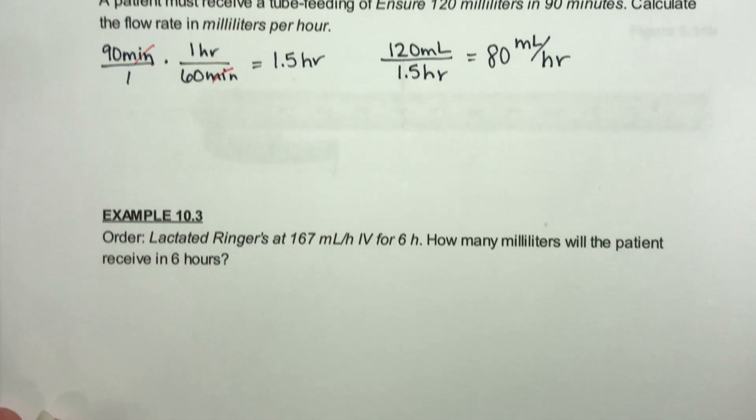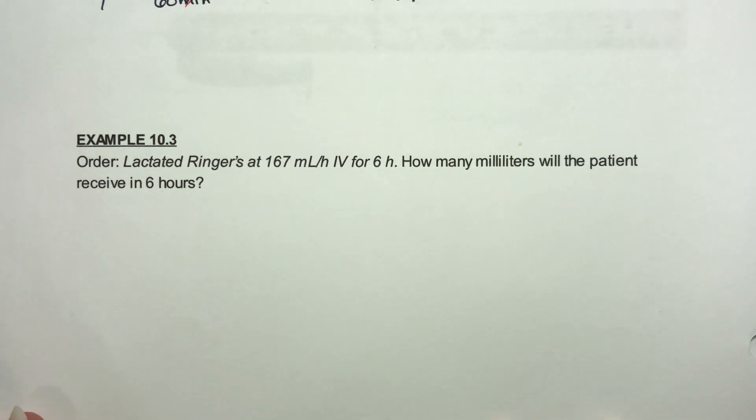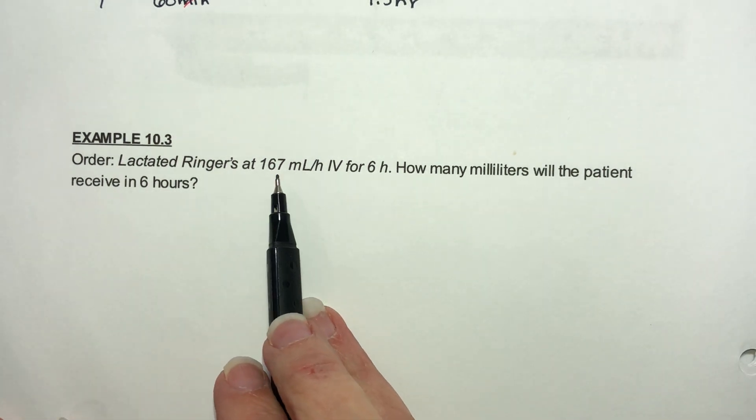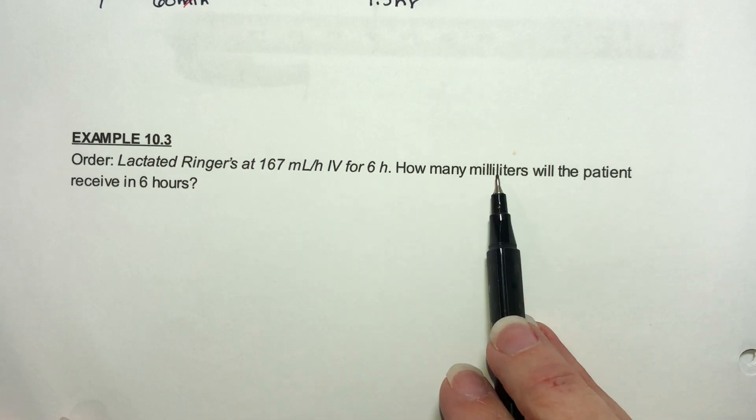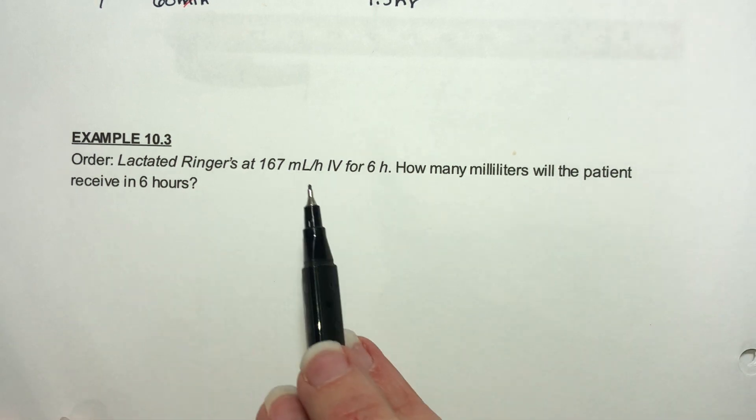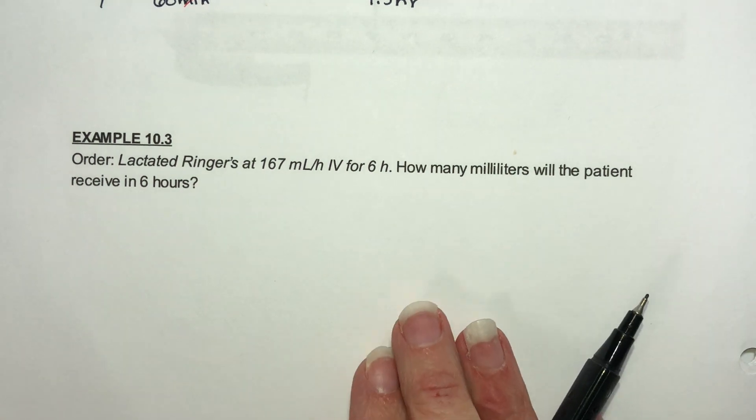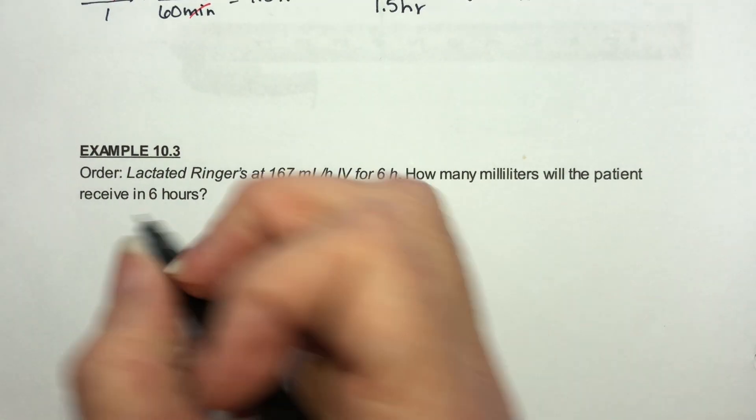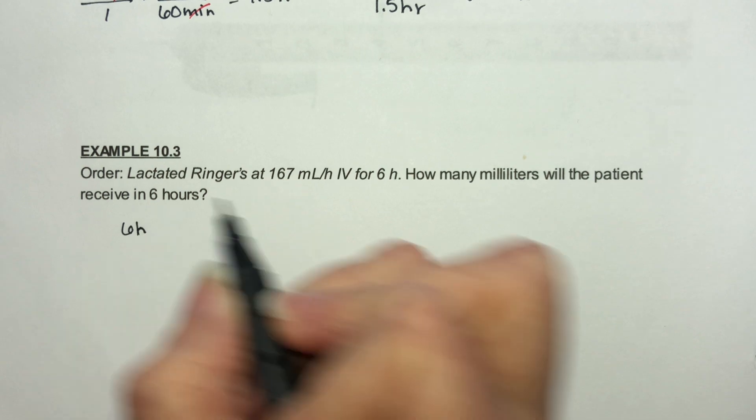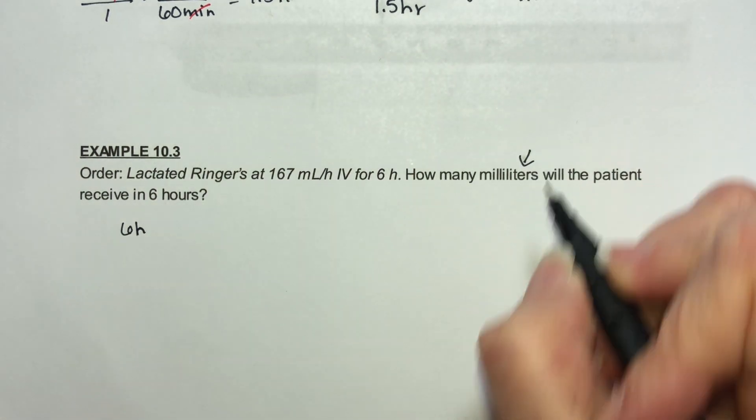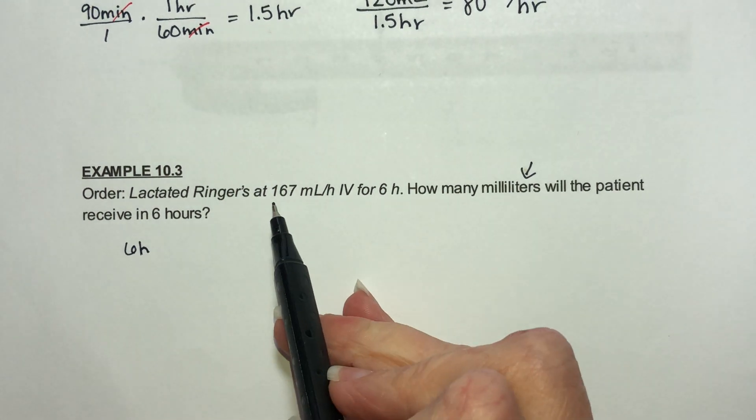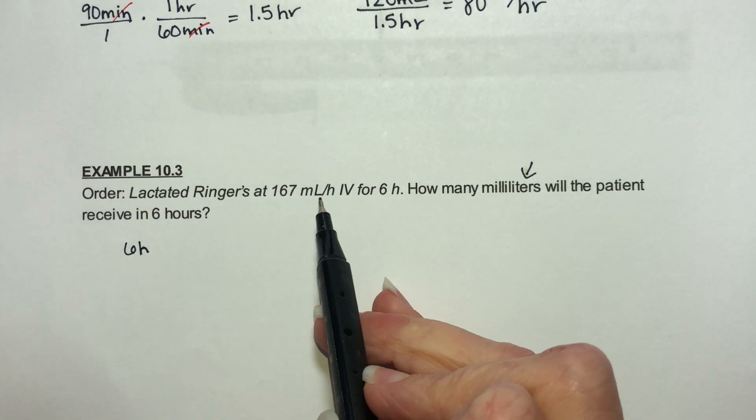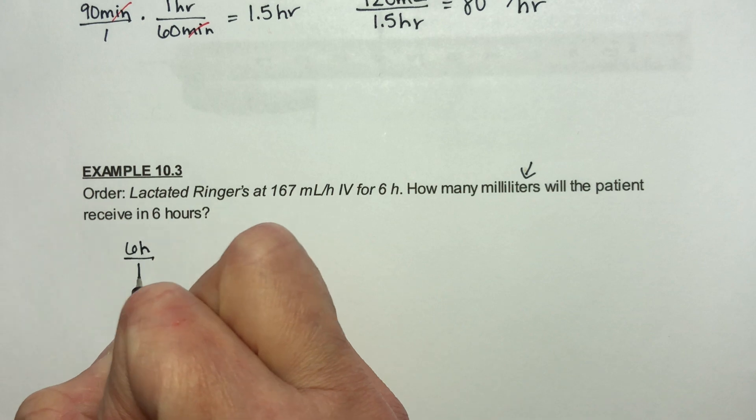Let's look here. The order is lactated ringers at 167 milliliters per hour for 6 hours. How many milliliters will the patient receive in 6 hours? We want to convert 6 hours into milliliters. The only relationship we have here is 167 milliliters per hour.